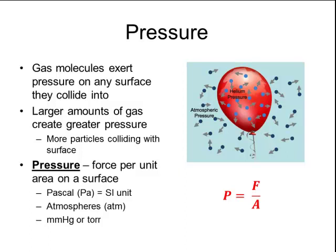However, in chemistry, we more commonly use atmospheres as a unit of pressure, millimeters of mercury, or torr. The unit of torr is equal in size to a millimeter of mercury, and it was named after the man who invented the barometer.